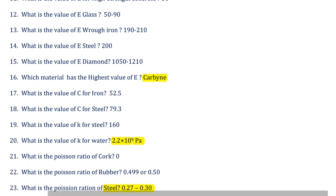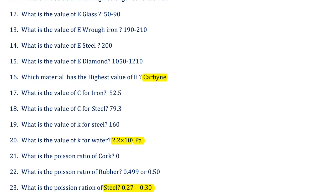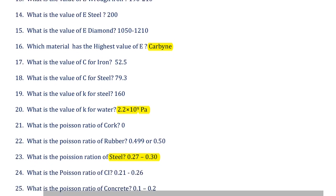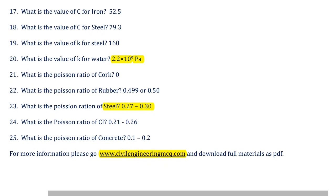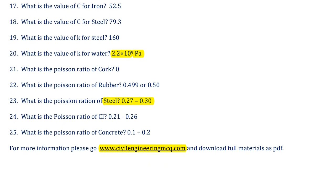Sixteenth question: which material has the highest value of Young's modulus? That is carbyne, with a value of 13,100 GPa or kN/mm². Seventeenth: what is the shear modulus for iron? That is 52.5 GPa. Eighteenth: what is the shear modulus for steel? It is 79.3 GPa. Nineteenth: what is the bulk modulus K for steel? Bulk modulus for steel is 160 GPa or kN/mm².